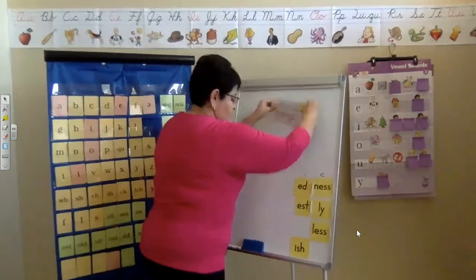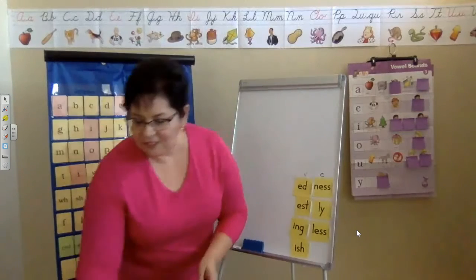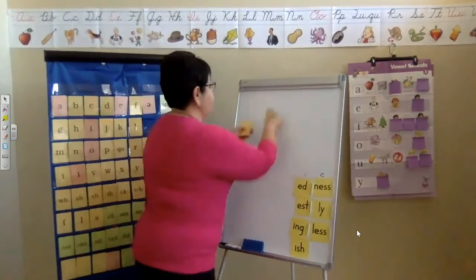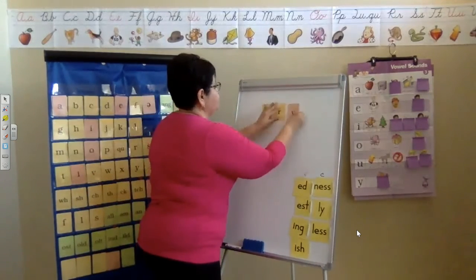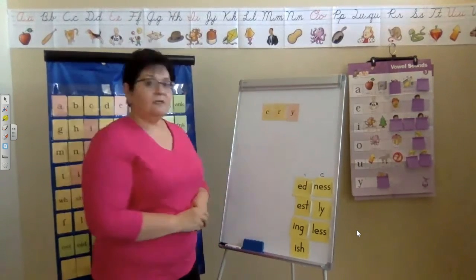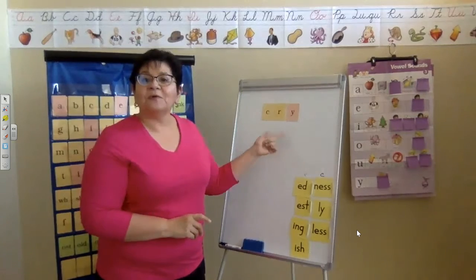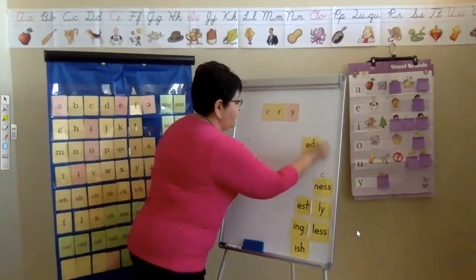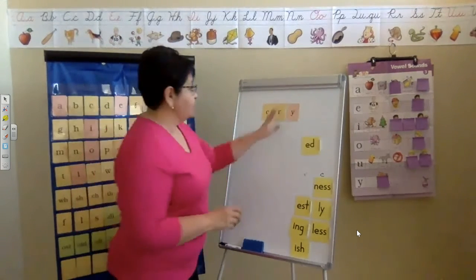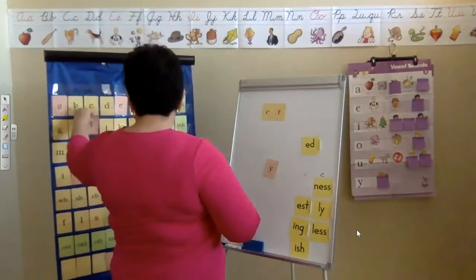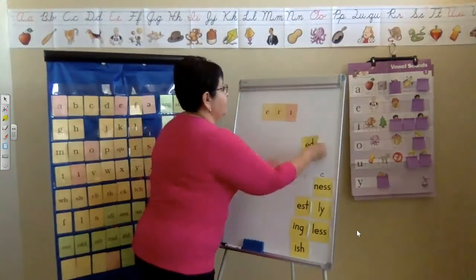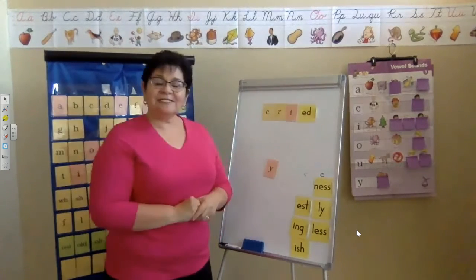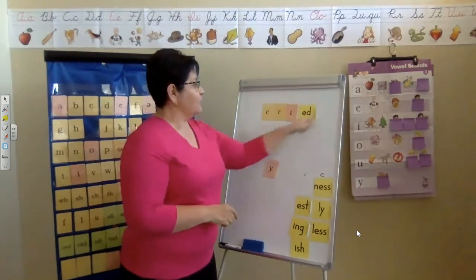Let's take a look at this. Ready for some more? Read this word for me. What is that word? Cry. How do I add my suffix, E-D? I change the Y to I and add E-D. Now read it. Cry, cried.